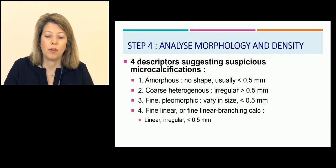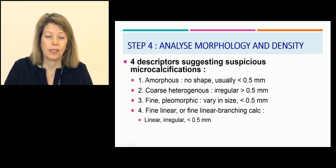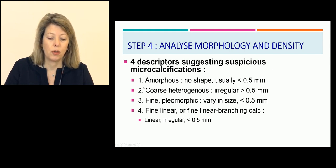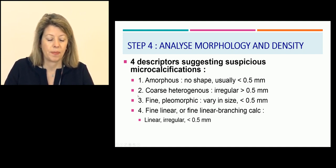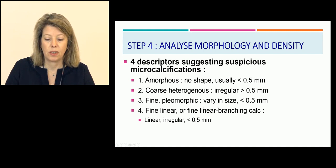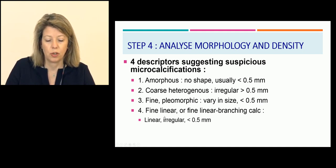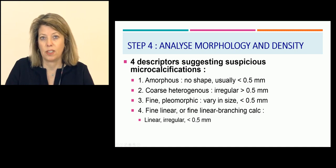Step 4: analyze morphology and density. Four descriptors suggest suspicious microcalcifications. First, amorphous — no real shape, very low density and low size — this is suspicious. Second, coarse heterogeneous — irregular, usually bigger and dense calcifications — also suspicious. Third, fine pleomorphic — many different sizes with lower size — suspicious. Fourth, fine linear or fine linear branching with ductal orientations, usually low size — extremely suspicious and suggestive of DCIS.